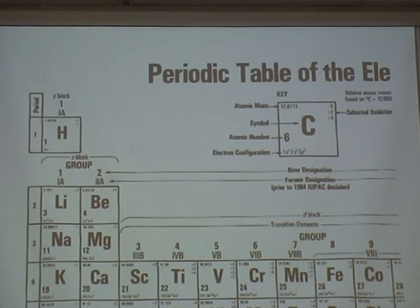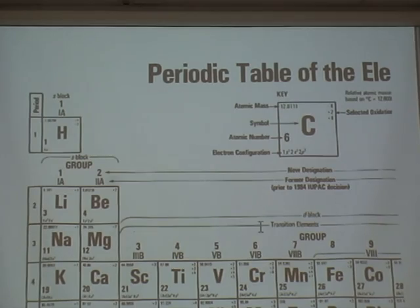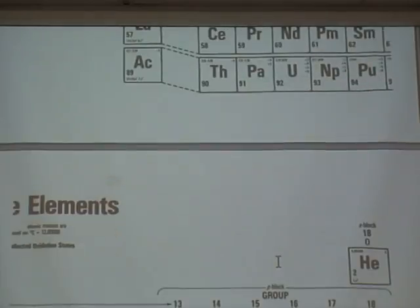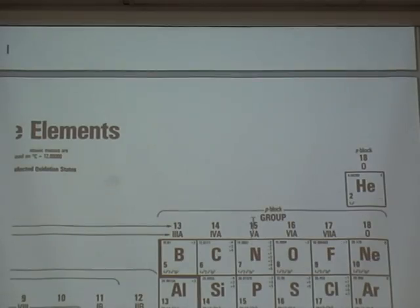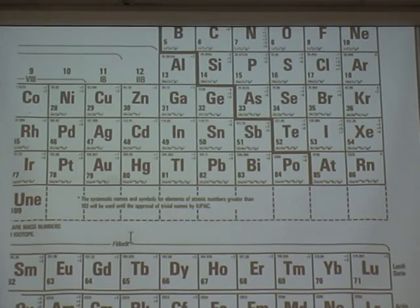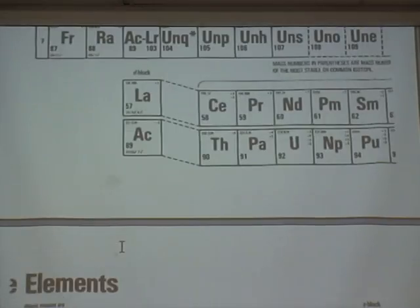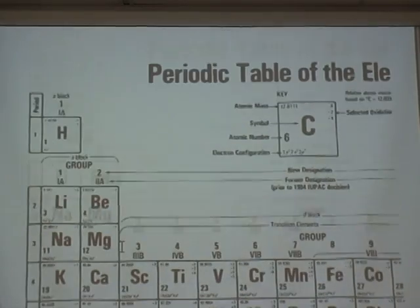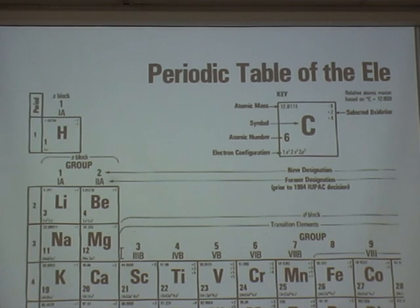If you look up here, you'll see the S block, and down here you'll see the D block. On the other side, you'll see the P block, and way down at the bottom, the F block. These blocks are actually related to the second quantum number, which we'll get to in a minute.